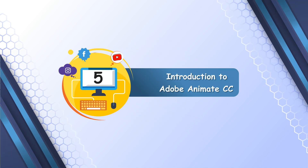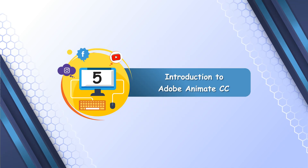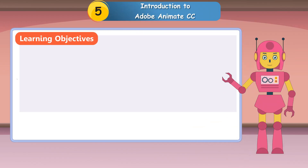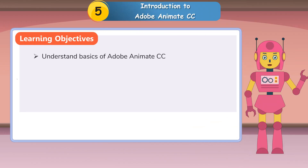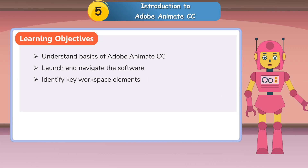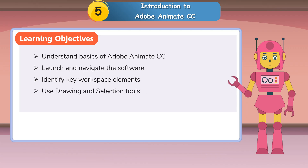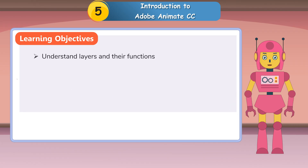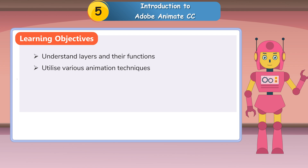Chapter 5: Introduction to Adobe Animate CC. Learning Objectives: Understand basics of Adobe Animate CC, launch and navigate the software, identify key workspace elements, use drawing and selection tools, create and manipulate shapes, understand layers and their functions, and utilize various animation techniques.